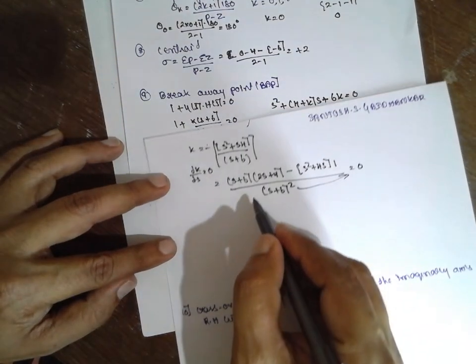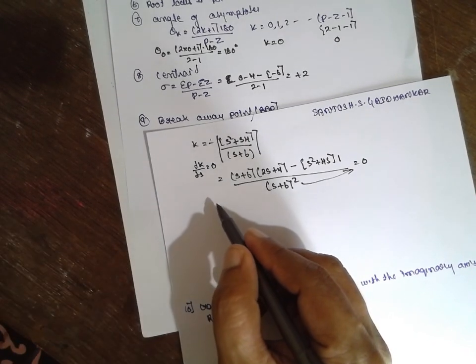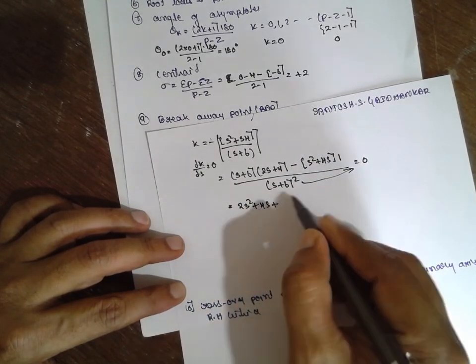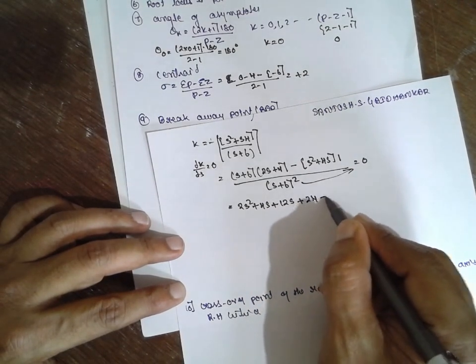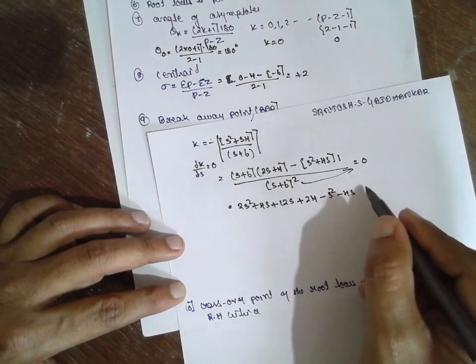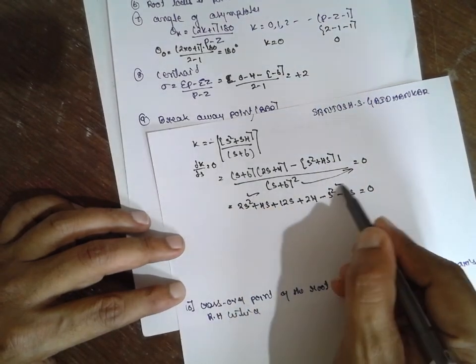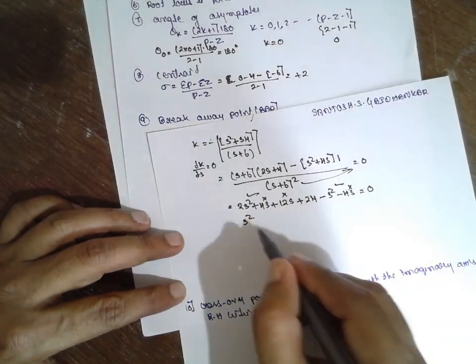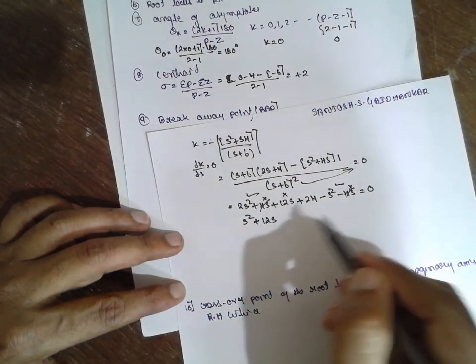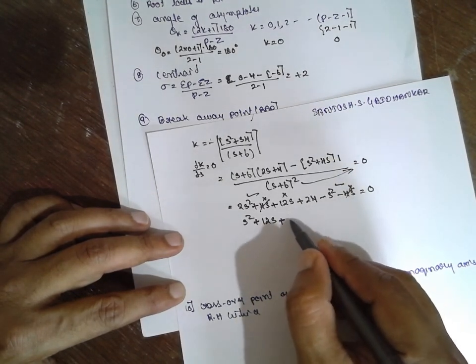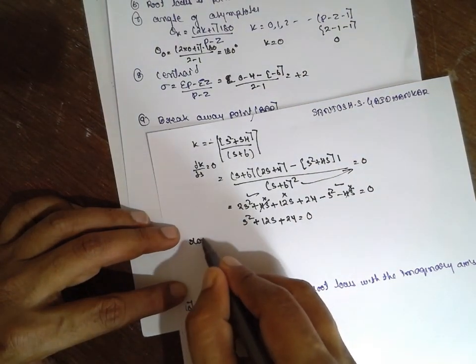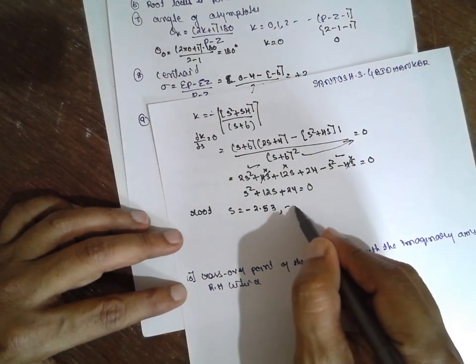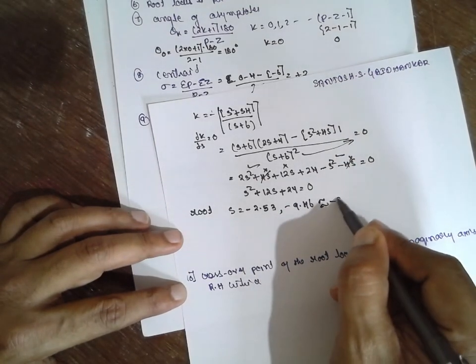Transfer here, it becomes 0 and it can be written as 2s squared plus 4s plus 12s plus 24 minus s squared minus 4s equals 0. This and this - one becomes plus 12s. That means this and this cancel: 12s plus 24 equals 0. If you find the root, it will be s equals minus 2.53 and minus 9.46, approximately minus 9.5.